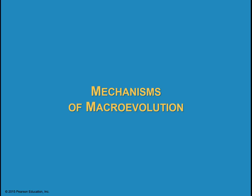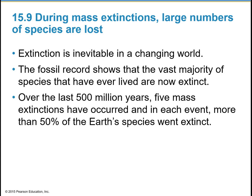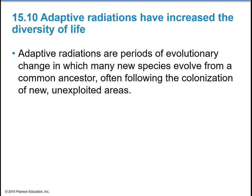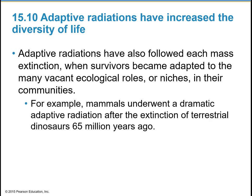Mechanisms of macroevolution: extinction is inevitable in a changing world. The fossil record shows that the majority of species that have ever lived are now extinct. Over the last 500 million years, five mass extinctions have occurred, in each of which more than 50% of Earth's species went extinct. Adaptive radiations are periods of evolutionary change in which many new species evolve from a common ancestor, often following the colonization of new unexploited areas. These radiations have followed each mass extinction when survivors become adapted to the many new vacant ecological niches. For example, mammals underwent a huge adaptive radiation after the extinction of terrestrial dinosaurs 65 million years ago.